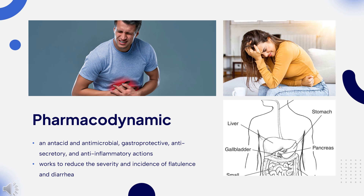In one study, bismuth subsalicylate was shown to eradicate up to 90% of H. pylori infection when used as part of a quadruple therapy regimen containing a proton pump inhibitor, tetracycline, and metronidazole. Bismuth subsalicylate also exhibited antimicrobial activity against Clostridium difficile, enterotoxic Escherichia coli O157:H7, norovirus, and other common enteric pathogens such as Salmonella and Shigella.